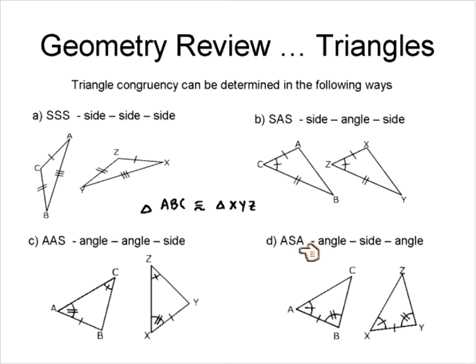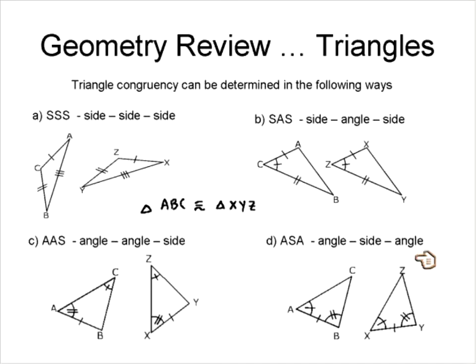The last property is Angle-Side-Angle (ASA). Angle, side, angle — those two triangles are congruent. We could make the statement that triangle ABC is congruent to triangle XYZ for all four of these congruency cases, so we're going to have to know those.